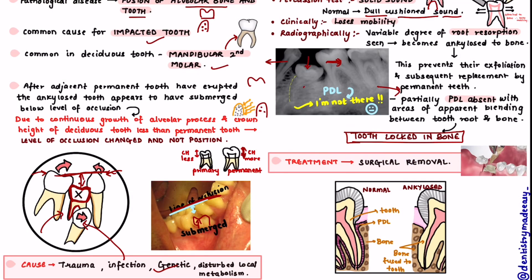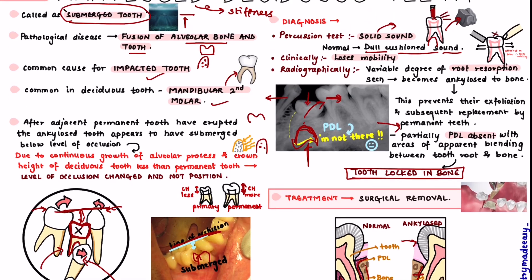In a normal tooth you have enamel, dentin, pulp, the PDL ligament, and then the bone. But in an ankylosed tooth, the PDL ligament is lost, so there is direct contact between the bone and the tooth — that is the fusion of bone with tooth. The treatment for this is surgical removal of the affected tooth.